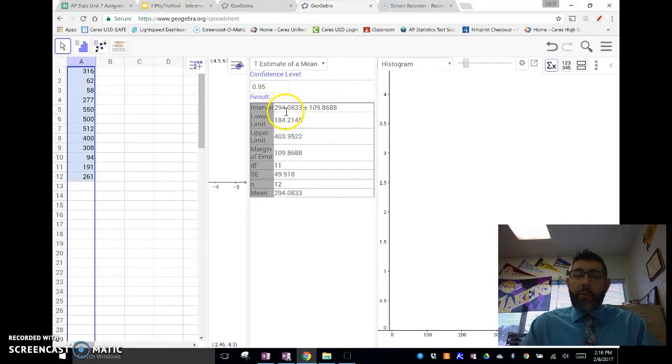We've got our interval right here, 294 plus or minus 109. Now, it'll do the math for you here and give you your upper and lower limits so you can know what your confidence interval is. And it'll give you a margin of error. Gives you all that information you need. So, you can say, look, we're 95% confident that the true weight, the true average weight of the gold chains on eBay is somewhere between 184.2 grams and 403.95 grams. So, we can do that also using GeoGebra.